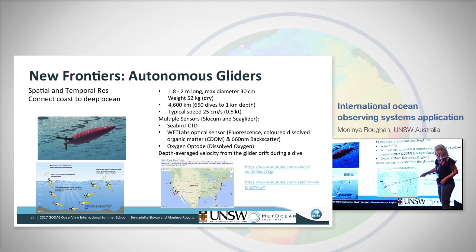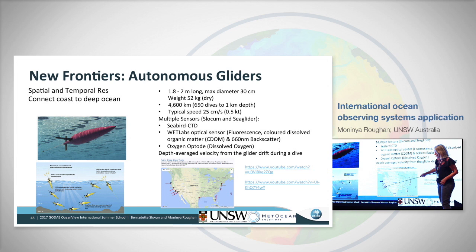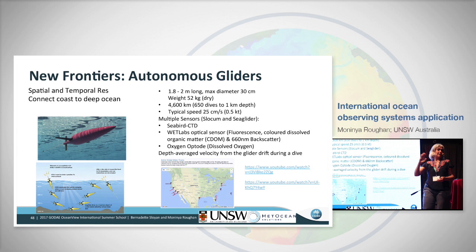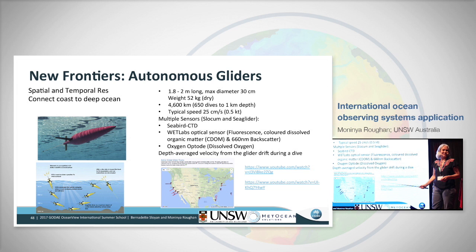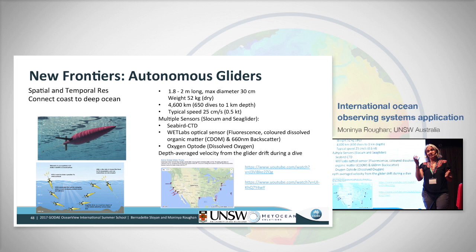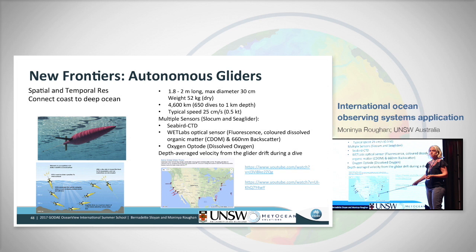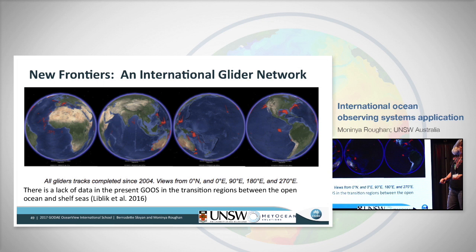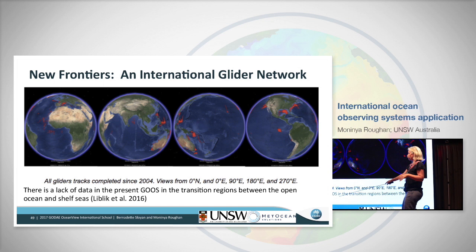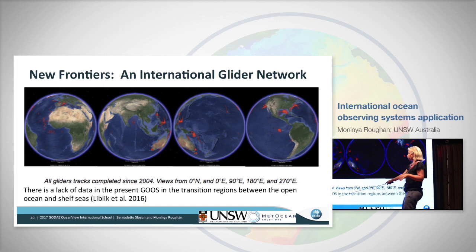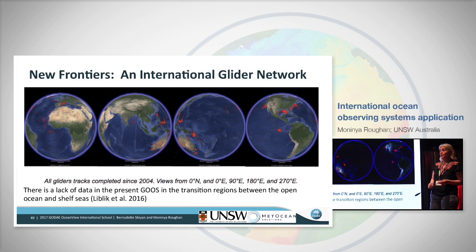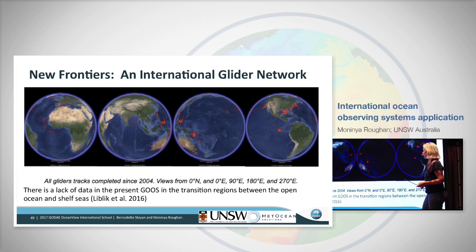These are examples of endurance lines off the west coast of the United States — a line that goes out and comes back repeatedly. In dynamic western boundary currents like in the Florida region, gliders get caught up in eddies, but you can measure the hydrodynamics of an eddy, which is really exciting. An international glider network is a new frontier in operational oceanography, and there's a move afoot. A recent paper presents a glider program as part of GOOSE. These are all the glider missions that have occurred globally in the last 10 years.